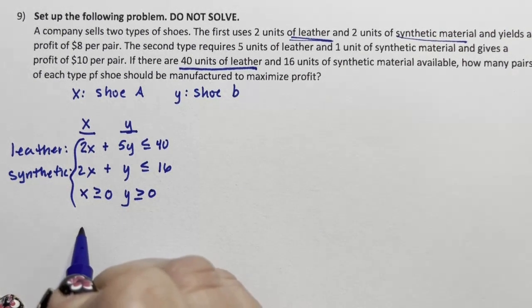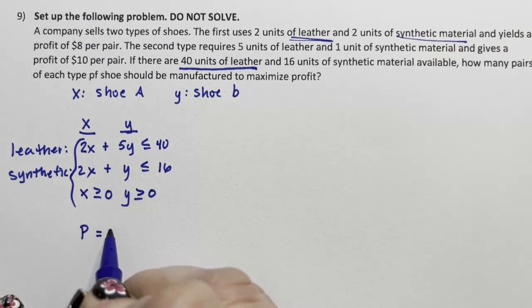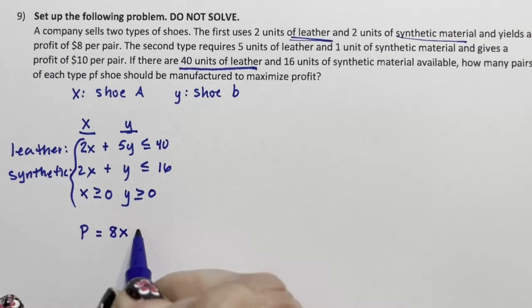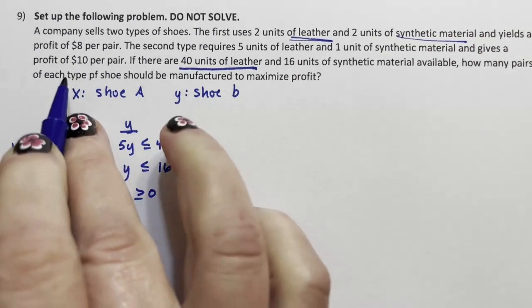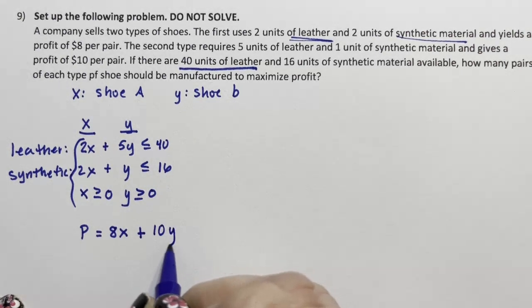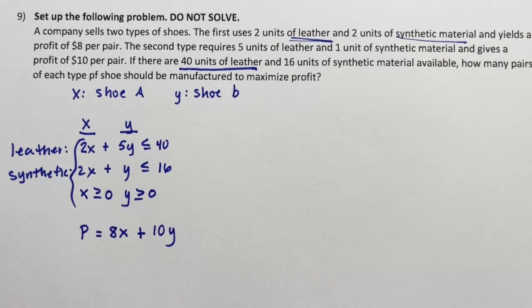And then last is our profit. And our profit says that you get $8 per pair of shoe A plus $10 per pair for shoe B. And we're done. That's it. System setup. Nothing else needs to be done.